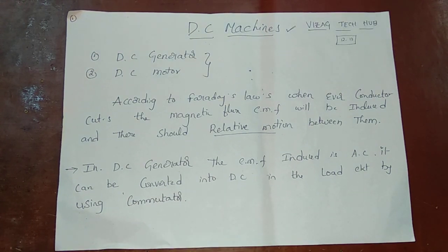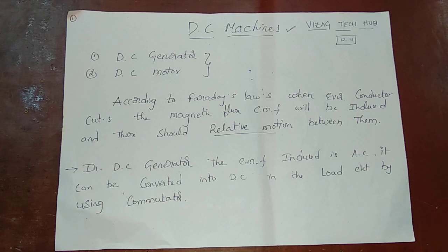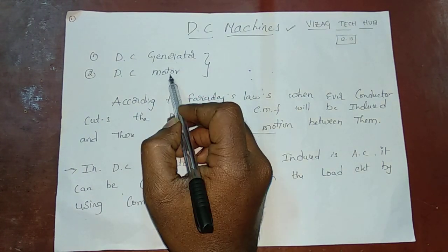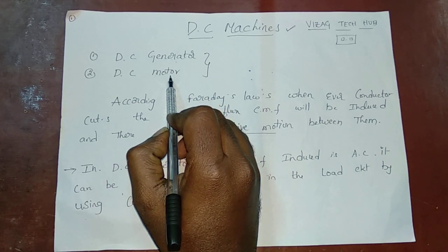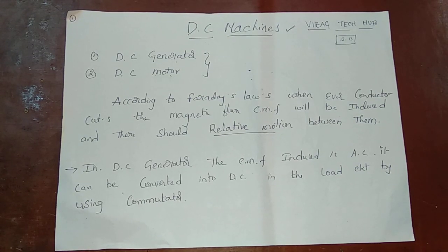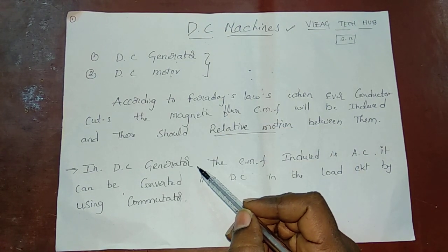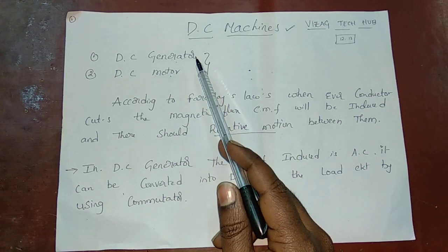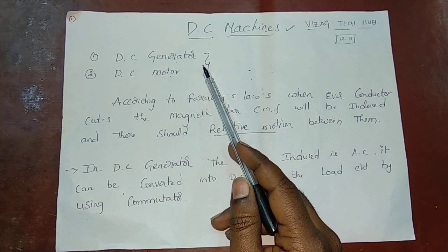DC machines have two types: DC generators and DC motors. If you choose to construct it one way, it will be a generator or a motor. The motor converts DC power to mechanical power. The generator produces EMF. The generator is a mirror image of the motor — if we look at the mirror of the generator, we have a motor. They are quite opposite, yet it's the same machine.